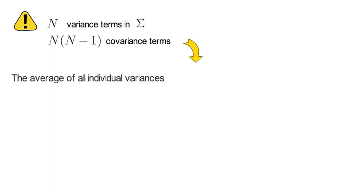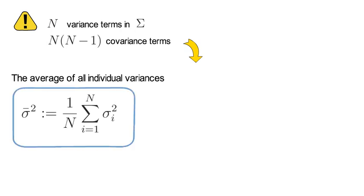Notice there are N variance terms in capital sigma and N times N minus 1 covariance terms.